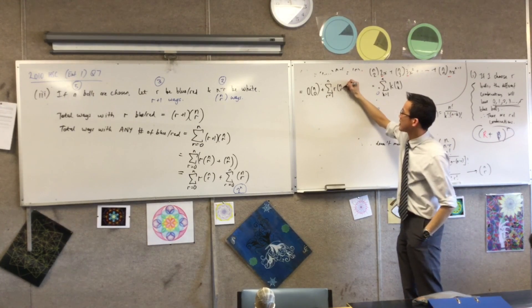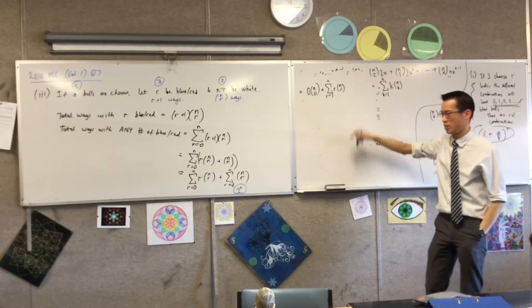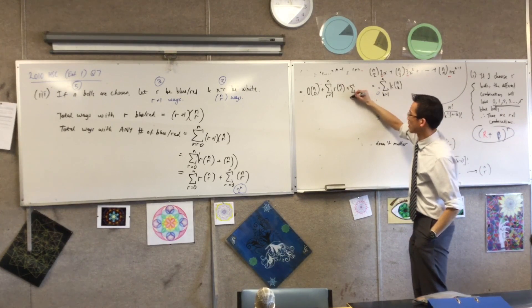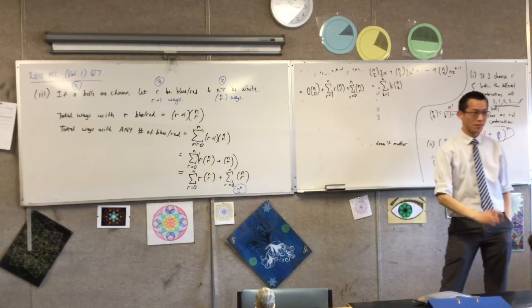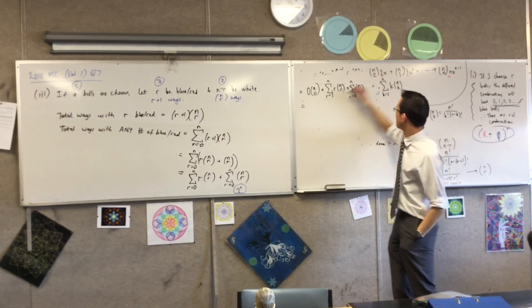And then what I'm left with is from 1 up to N. Does that make sense? Just took it off the front. Of R, N, C, R. This I can deal with. Plus this other sigma notation that we already have worked out what to do. Pretty much there. Let's evaluate. Get this out of the way.